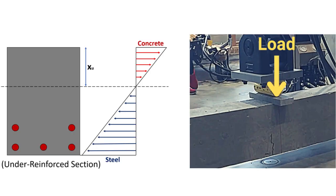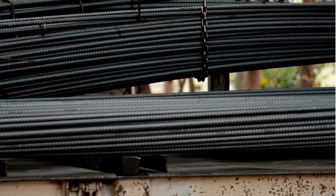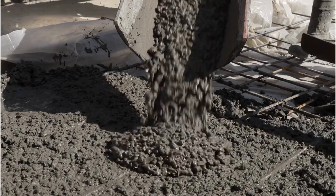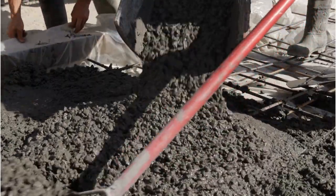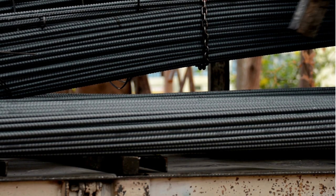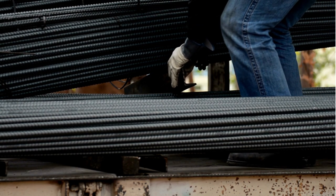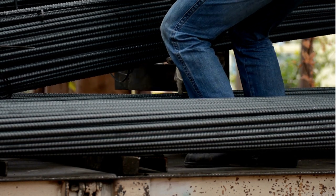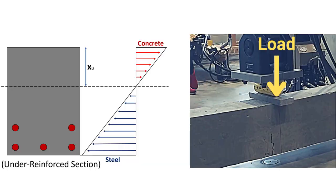Under reinforced sections are also preferred from the economical point of view. The cost of steel is more as compared to that of concrete, and since the permissible strength of steel in under reinforced sections is less as compared to balanced and over reinforced sections, this means less quantity of steel is used, thus adding to the economy of the structure.